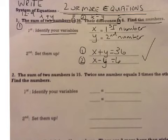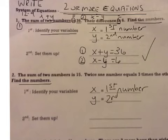The second one: The sum of two numbers is 15. Twice one number equals three times the other. Find the numbers. So again, we're looking for two numbers, so x and y. This will be first number and this will be second number.